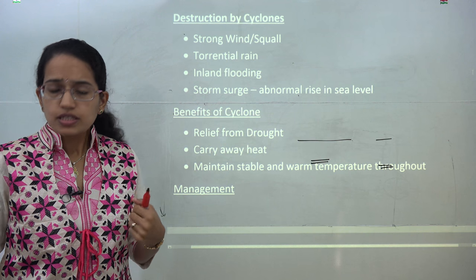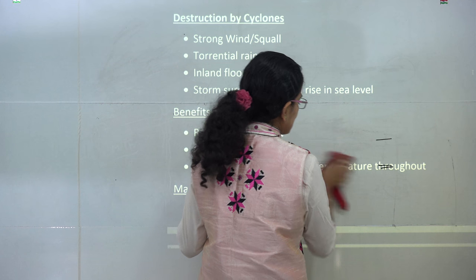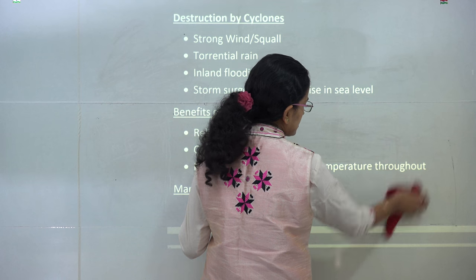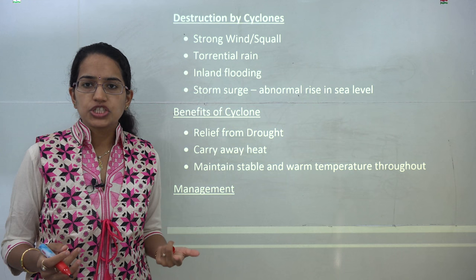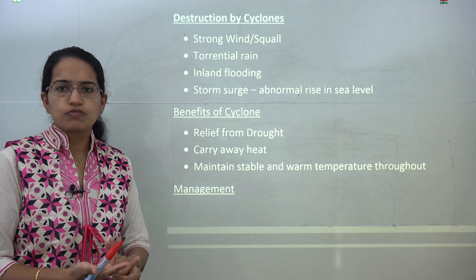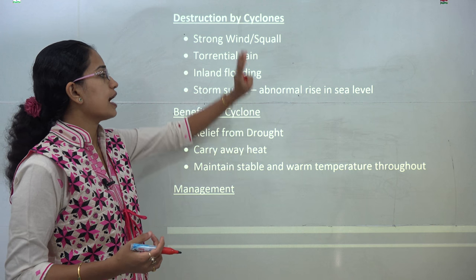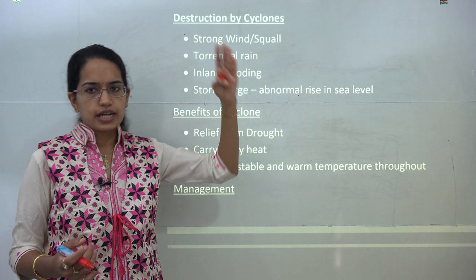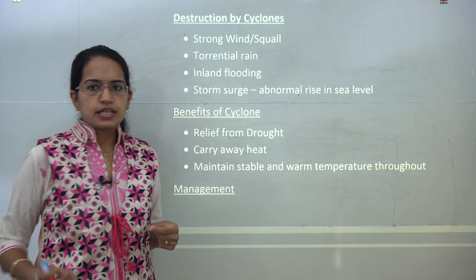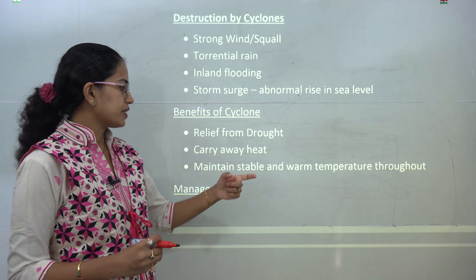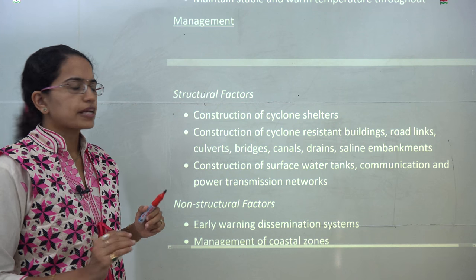Cyclones cause numerous destructions but also have some benefits. Destruction includes strong winds, squalls, torrential rainfall, inland flooding, destruction of coastal areas, damage to the shipping and fishing industry, and storm surge — an abnormal rise in sea level. Some benefits include temporary relief from drought conditions and carrying away heat, thereby maintaining stable warm temperature conditions for a prolonged period.